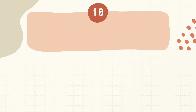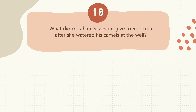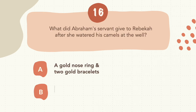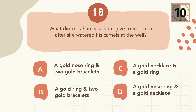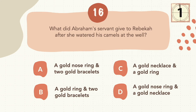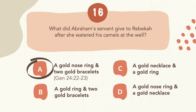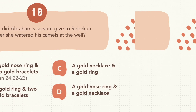Question 16: What did Abraham's servant give to Rebekah after she watered his camels at the well? The correct answer is A, a gold nose ring and two gold bracelets.